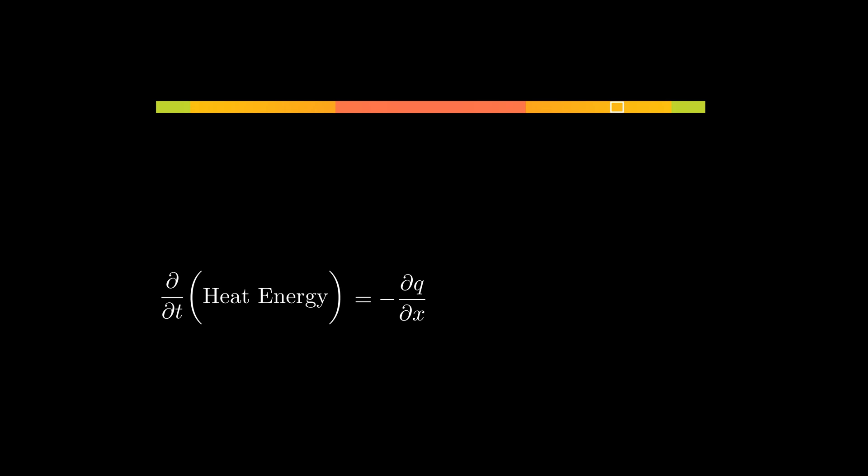There is one last thing that I haven't discussed and that's a heat source. It is possible that the rod is heated by an external source like a blowtorch or maybe some radioactive decay causing heat to generate from inside. In any case, to account for this, I need to add a source term to our equation and get a complete equation defining how the heat energy changes with respect to time.